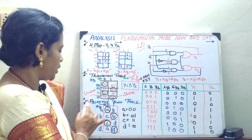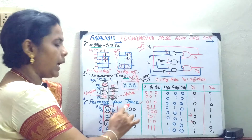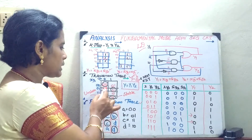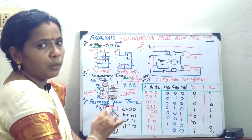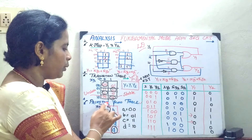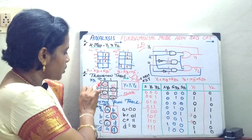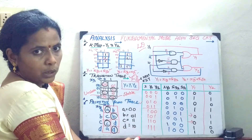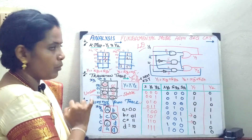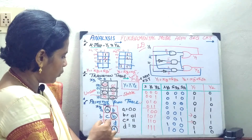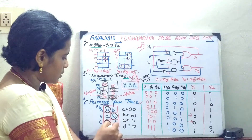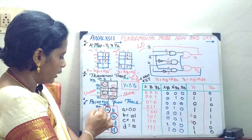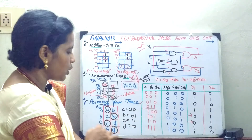Now we move on to the fourth condition: framing your primitive flow table. Each row is a state having one stable state and is given a variable label. The assignment is: A is 00, B is 01, C is 11, D is 10. With this, replace all binary values in the table with the corresponding letters. Wherever 11 comes put C, 00 means A, 10 means D, 01 means B. Round off the stable states and write the outer labels the same way. This completes your primitive flow table.